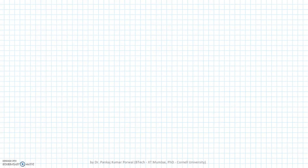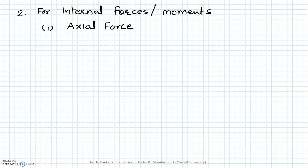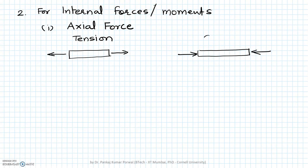The second sign convention is the one we use for internal resisting forces and moments. The first internal force is axial force, which has two senses: tension and compression. When a member or bar is in tension, both its ends are pulled apart. When a member is in compression, both of its ends are pushed inward.